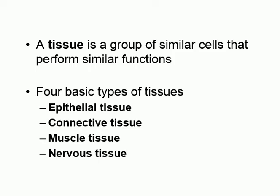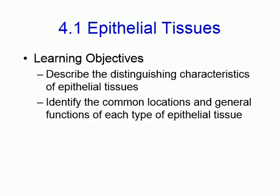Chapter four, we're moving to the tissue level. We did the cellular level, now we're at the tissue level. We have four different types of tissues: epithelial tissues, connective tissues, muscle tissues, and nervous tissues. We will have an idea about each one of these tissues.